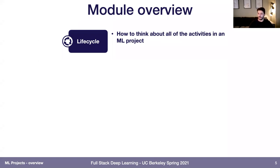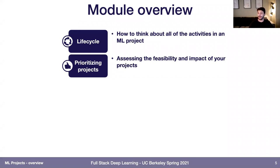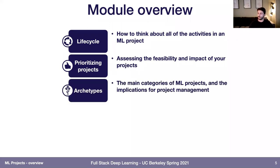What we'll cover today: we'll start by talking about the life cycle of a machine learning project — to help you wrap your mind around all the activities you'll need to think about if you're building an end-to-end ML project. Then we'll talk about how to pick projects and how to prioritize which ones to work on, which will boil down to assessing feasibility and potential for impact. Then we'll talk about different archetypes of projects — different categories of machine learning projects and the implications of those categories for how you manage them.